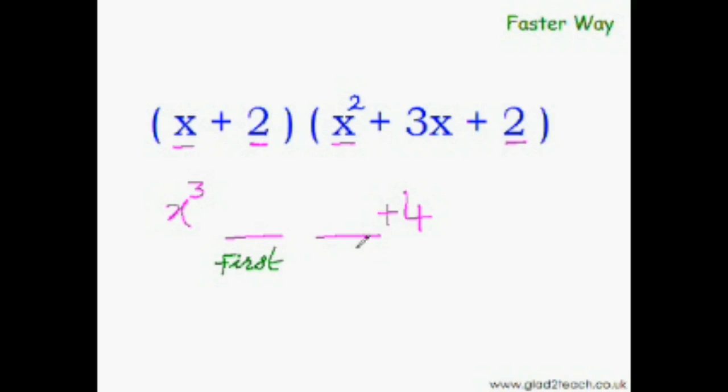Now to find the first middle term, we just have to do the rainbow multiplication on the first two terms of this expression and the first two terms of this expression. This is 3x square plus 2x square, which is 5x square. Now just one more term to go.